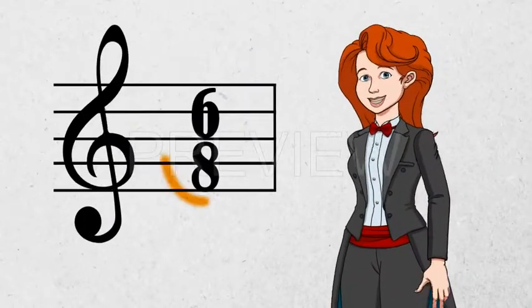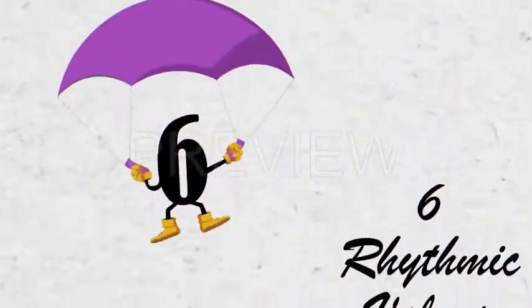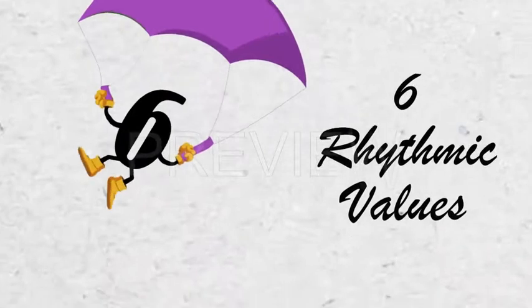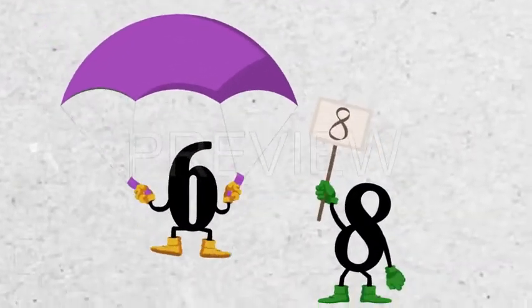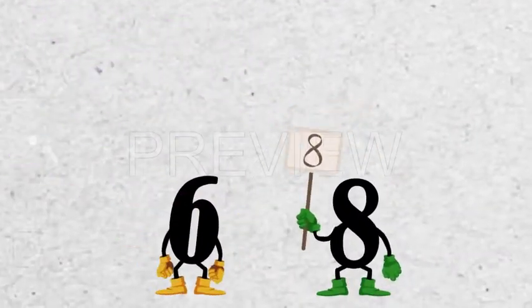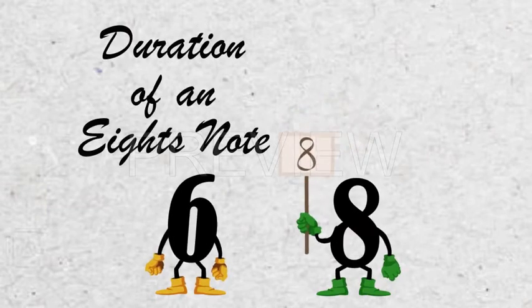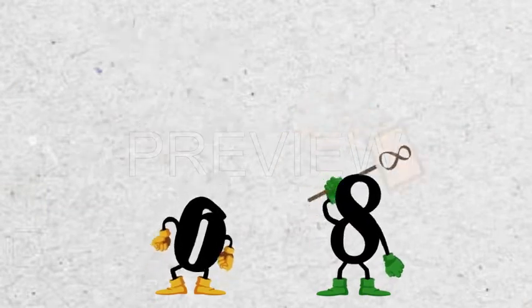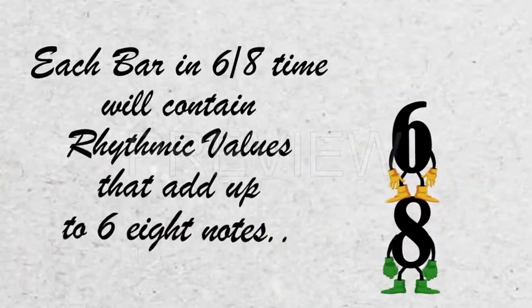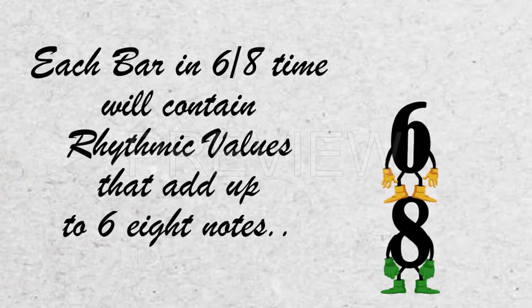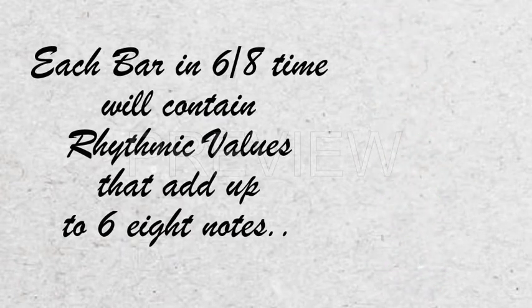In 6/8 time, the 6 tells us that each bar will contain six rhythmic values, while the 8 tells us that each of these beats will have the duration of an eighth note. So each bar in 6/8 time will contain rhythmic values that add up to six eighth notes.